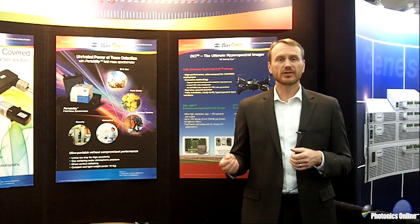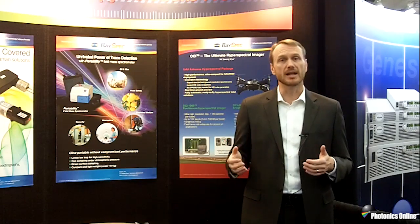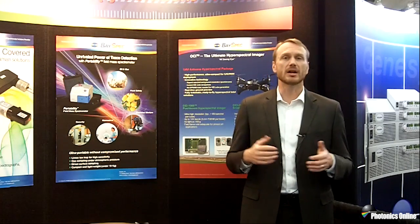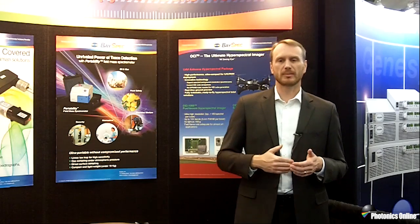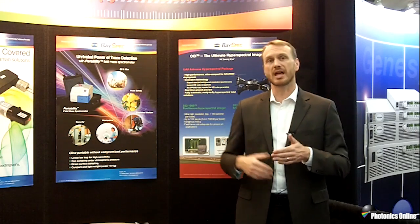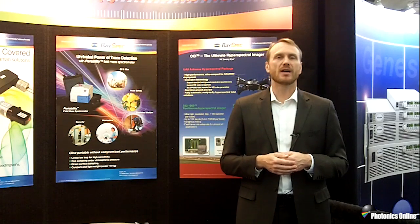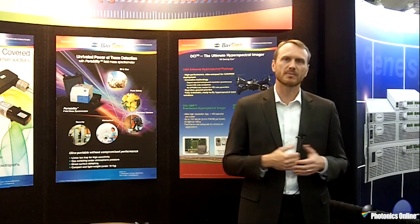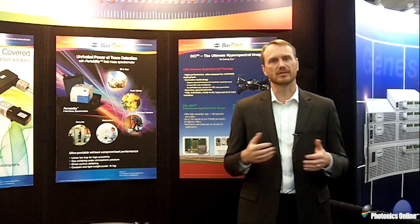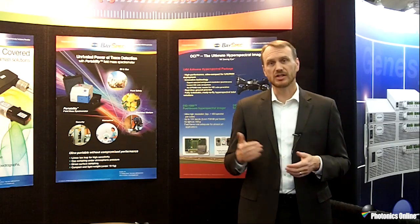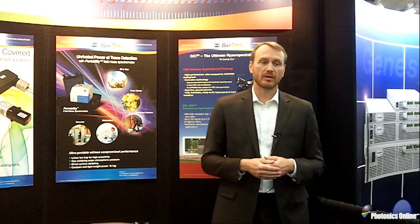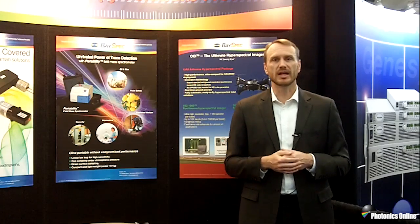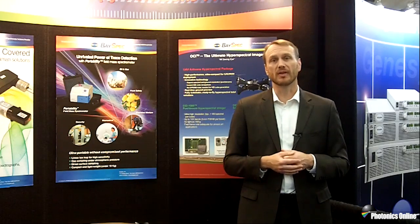Another consideration with hyperspectral imaging is what wavelength range you want to be in. Different samples have different reflectivity properties. Plants, for instance, are highly reflective in the near infrared, around 800 to 1000 nanometers. In mining applications, it's typically more in the shortwave infrared, around 1300 nanometers to 2.5 microns. For food inspection, visible might be enough. So when determining what type of hyperspectral imager you want, you need to know the reflectivity properties of the materials you're looking at. If those aren't well known, you would want to do some discovery and research on your samples to determine the key wavelengths of interest.